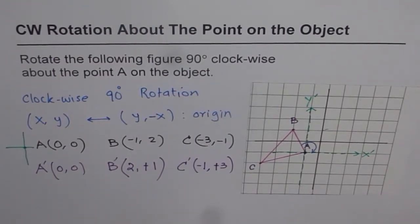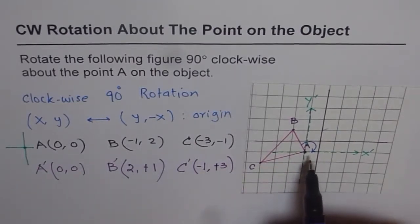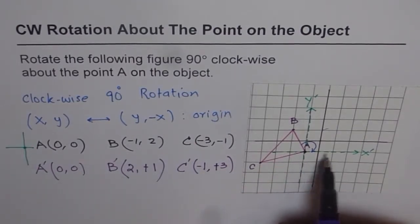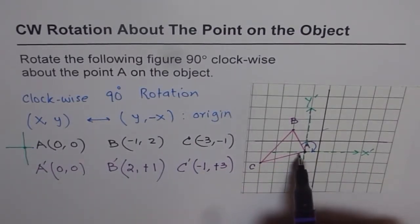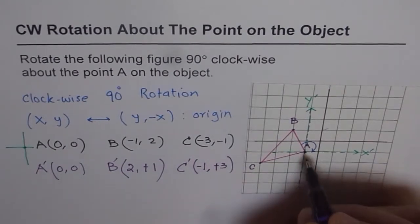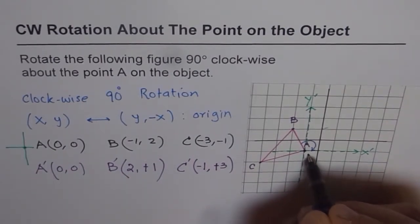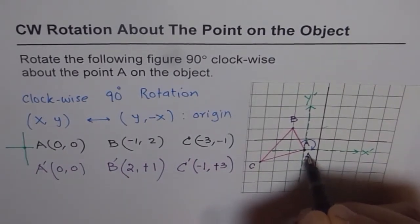These are the final points after the clockwise rotation by 90 degrees. Let's plot these back into the new coordinate system. A' = (0, 0) remains at the same origin point, which we call A'.